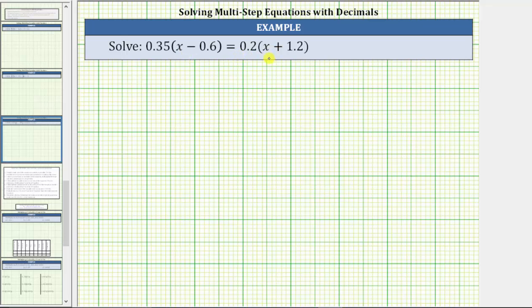Notice how for this equation, there are parentheses on both sides. We can clear the parentheses on the left by distributing 0.35 or 35 hundredths, and we can clear the parentheses on the right by distributing 0.2 or 2 tenths.